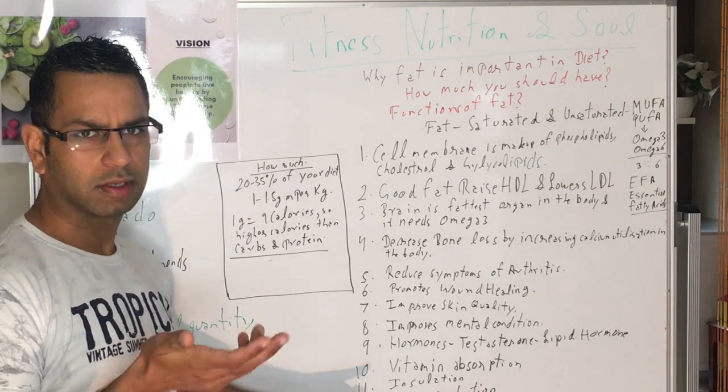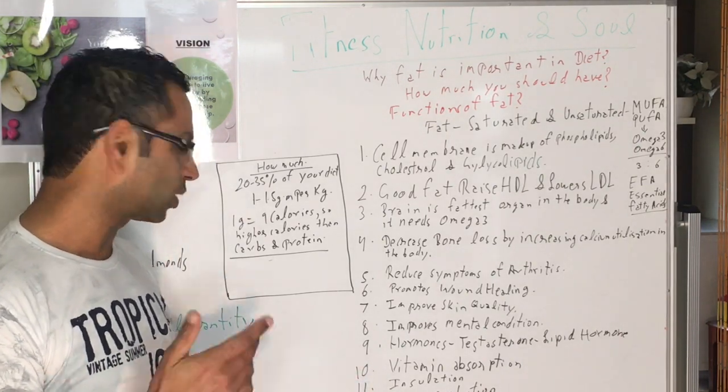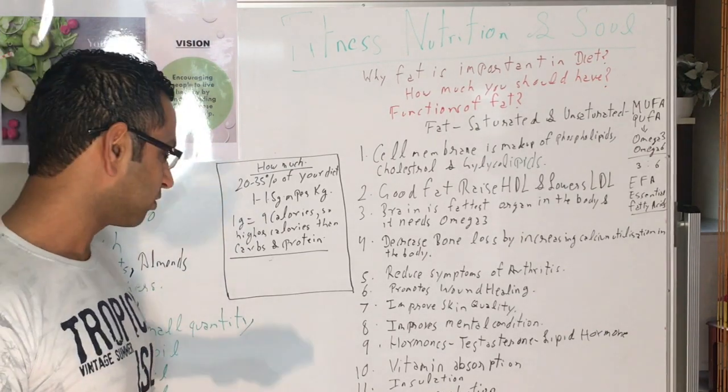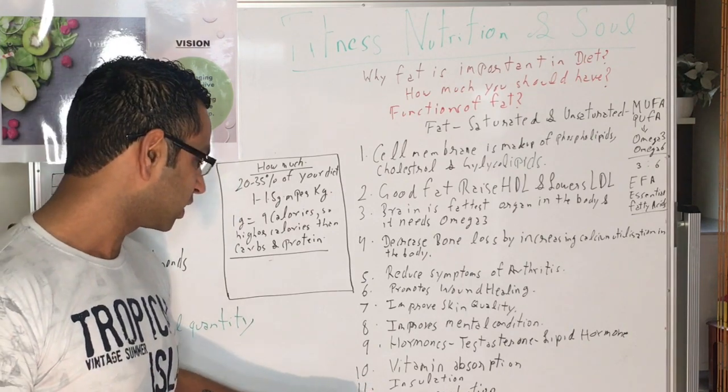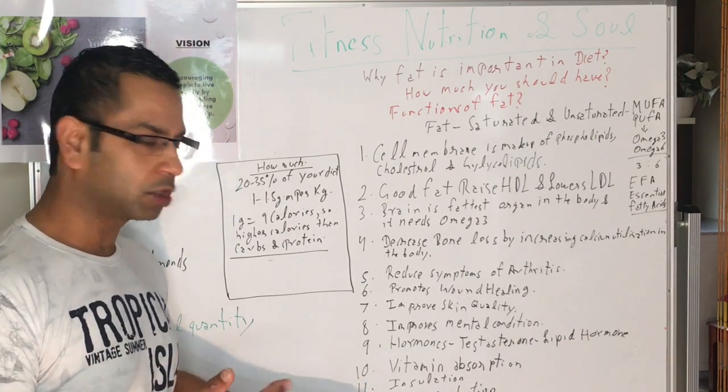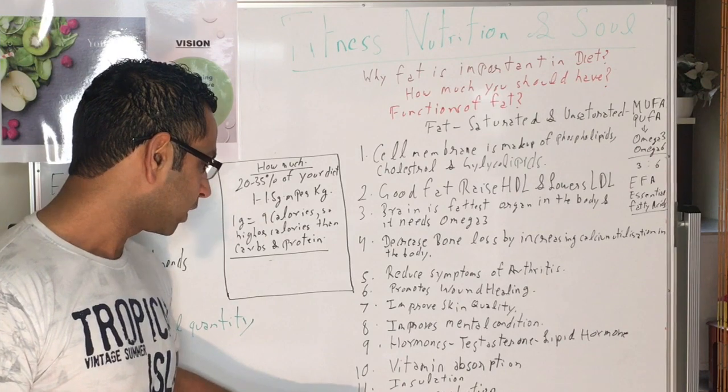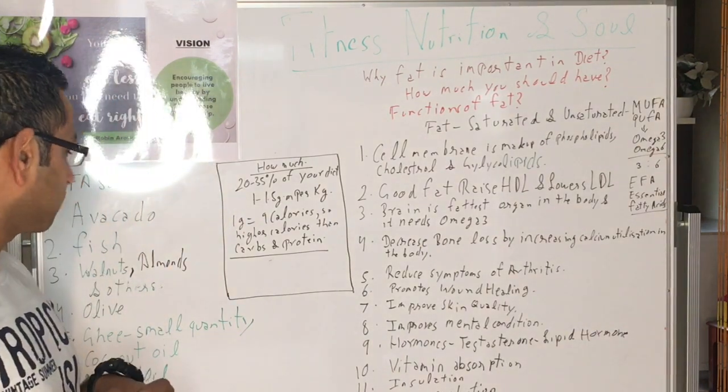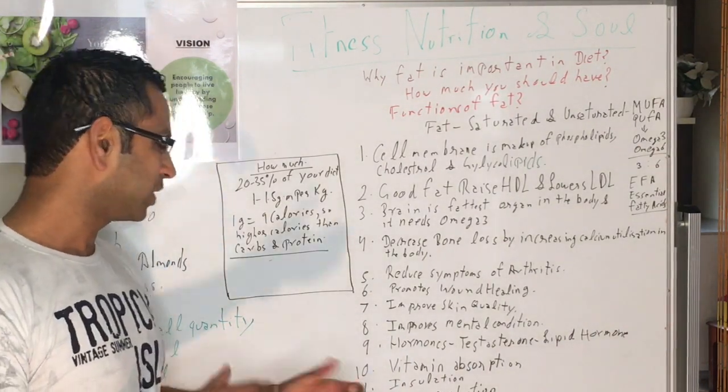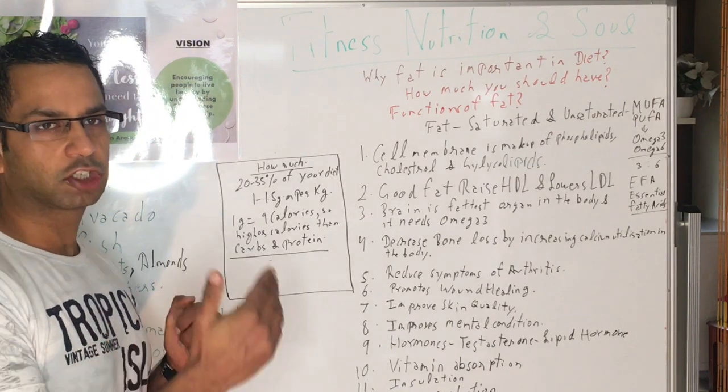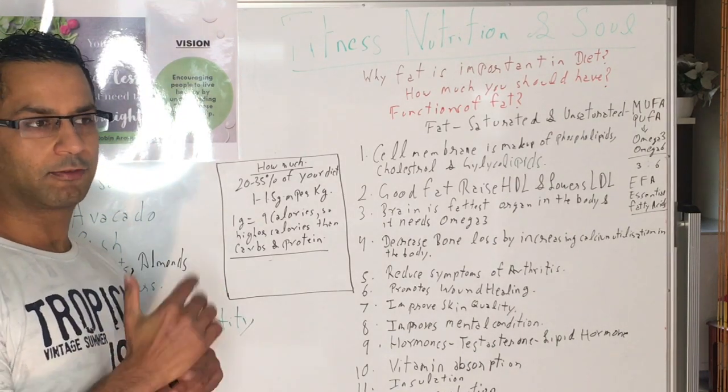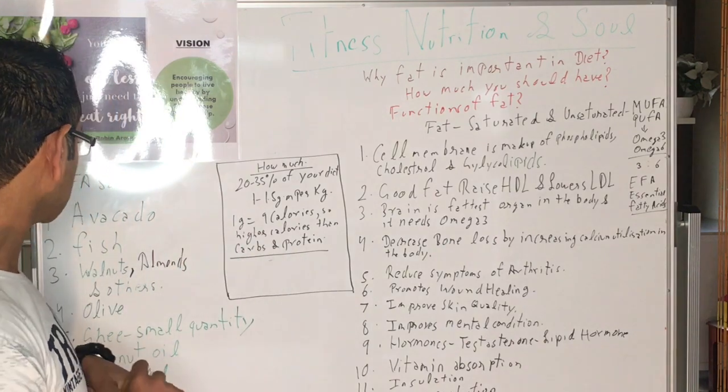The twelfth function is energy production. The body stores fat so that when you go into starvation mode it can survive on the fat. It helps with energy production and provides energy in everyday life. The last function is satiety control—it keeps you fuller for longer.